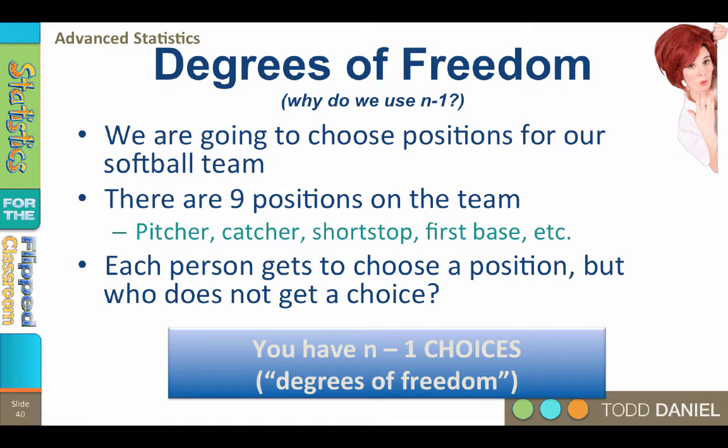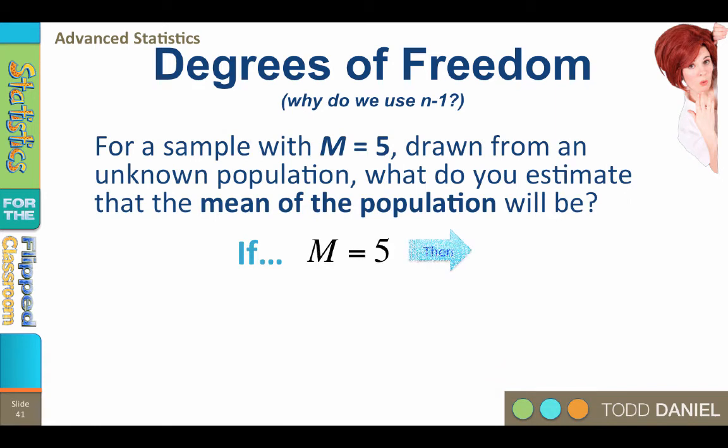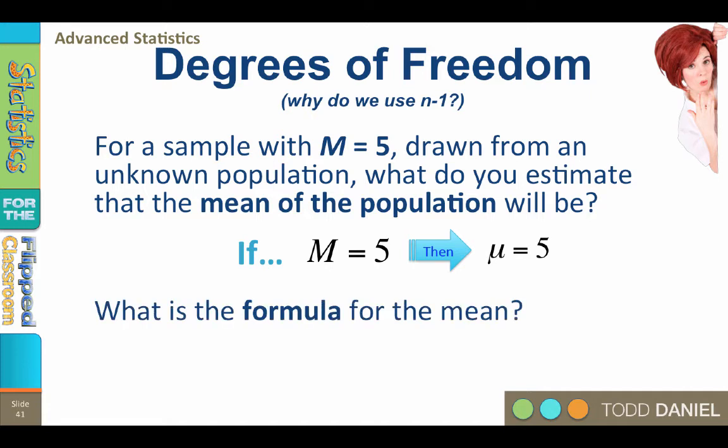Now let's apply this to a sample. We have chosen a sample of nine subjects from an unknown population. The mean of our sample equals 5. What do you estimate will be the mean of the population? Because the sample mean is the best estimate of the population mean, we estimate that the mean of the population will be 5.